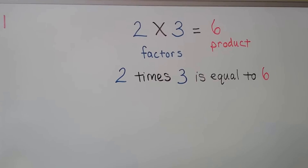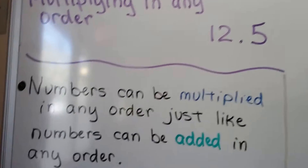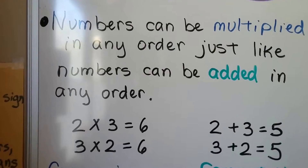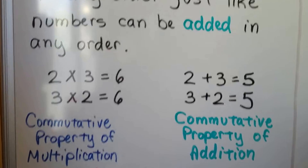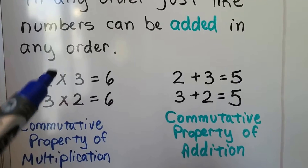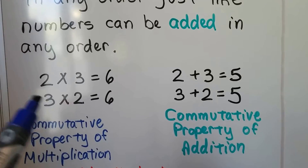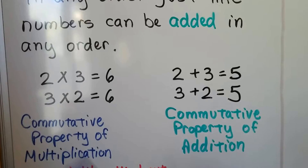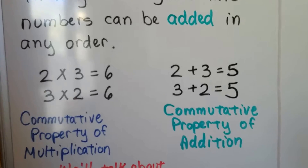This says 2 times 3 is equal to 6. Numbers can be multiplied in any order, just like numbers can be added in any order. That's the commutative property. If we have 2 times 3, that's going to equal 6. And if we turn the numbers around to a different order, 3 times 2 is also equal to 6. So it didn't matter which one was first and which one was second — we still had 6.